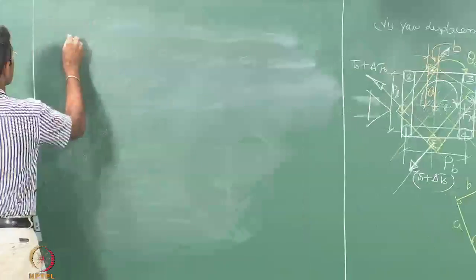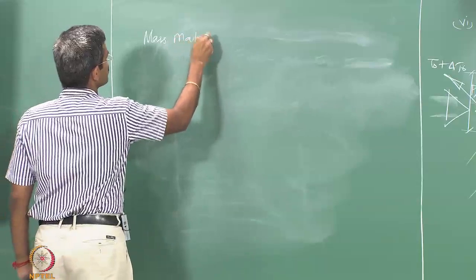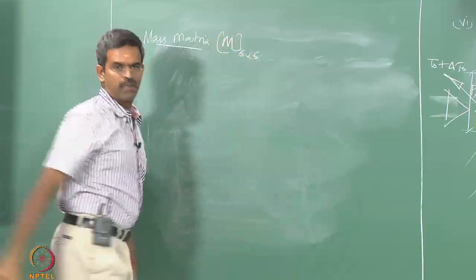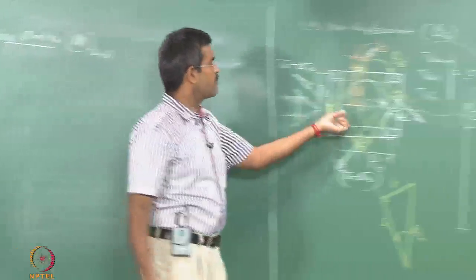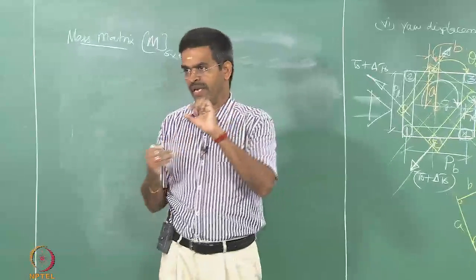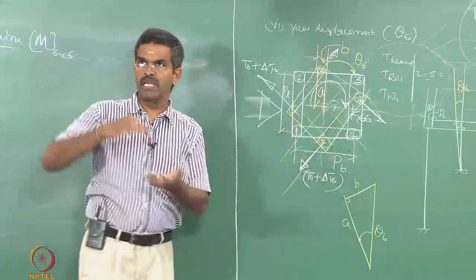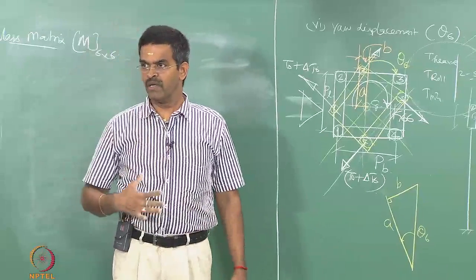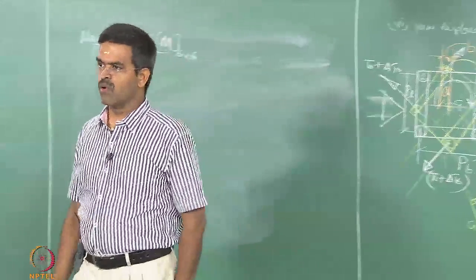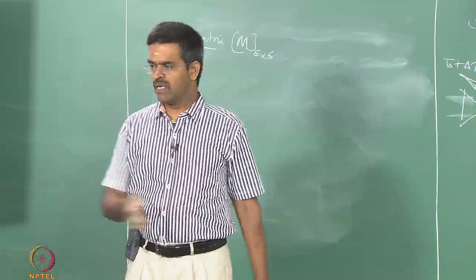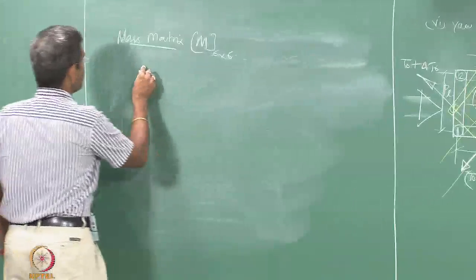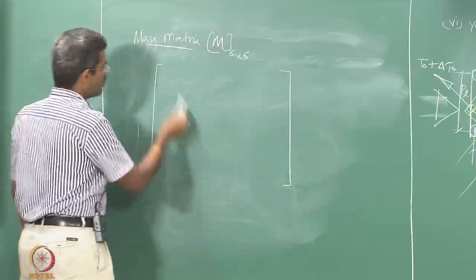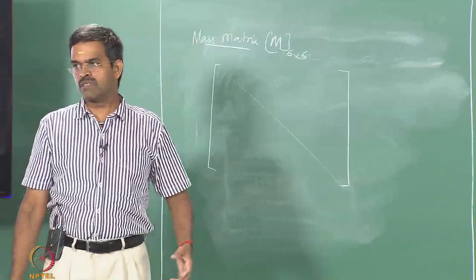Now let us talk about the mass matrix. As usual, mass is a 6×6 matrix, and we lump the mass of the whole system at the point where degrees of freedom are measured — in this case, at the CG on the deck. Once that is done, I lump all mass at the CG of the deck. Though the deck is shown as a point in plan, it is a 3-level deck, and you must imagine a point where the mass moment of inertia of the whole system is concentrated.